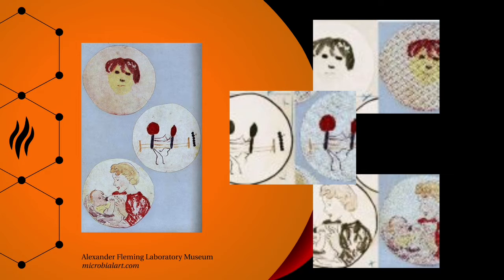Most pieces today are created and then frozen in time by being filled with acrylic resin. Fleming enjoyed finding new species of microorganisms and using them as new pigments. And even today, almost a hundred years later, microbiologists and biochemists are still finding and creating new species and pigments like fluorescent proteins.